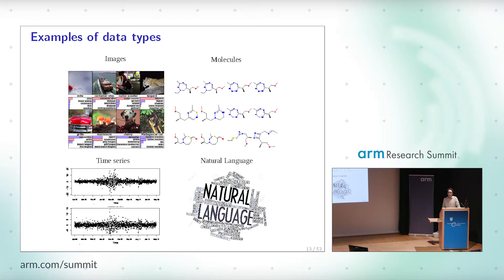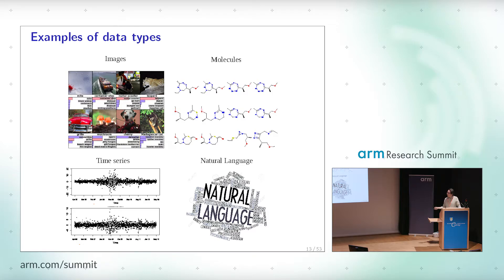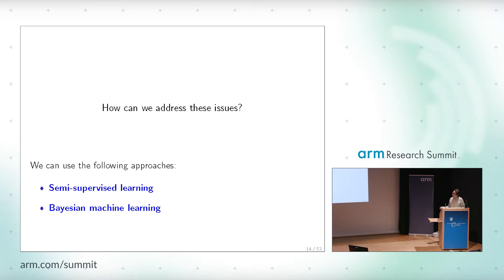For these techniques to work, we need to have structure in the input space — such as the two clusters shown in the previous example. In general, these techniques will be successful when this type of structure in the unlabeled data can be exploited, and this type of structure appears in practice across many different types of data: real-world images, molecules, time series, and even natural language. So semi-supervised learning methods will allow us to reduce the data hunger of deep learning.